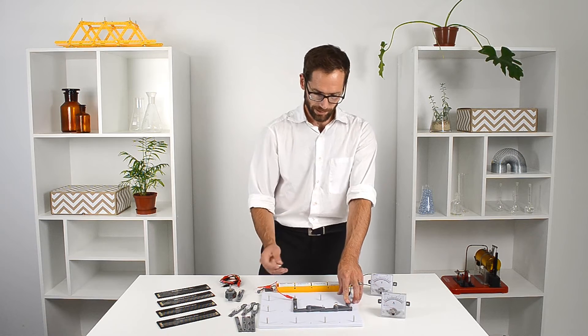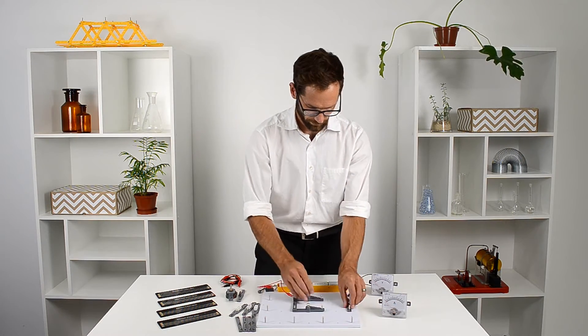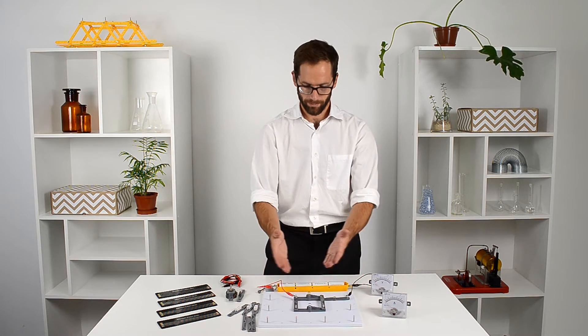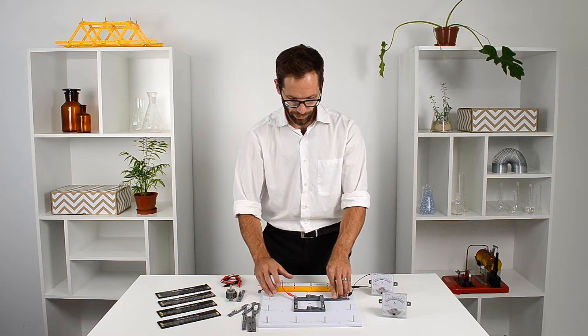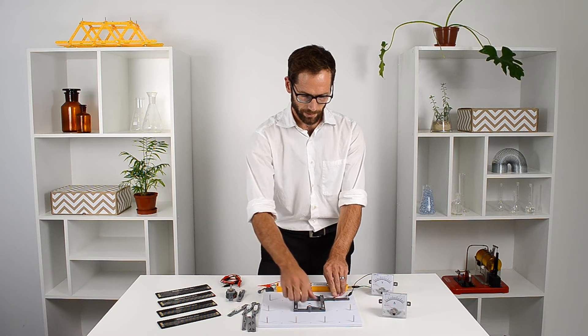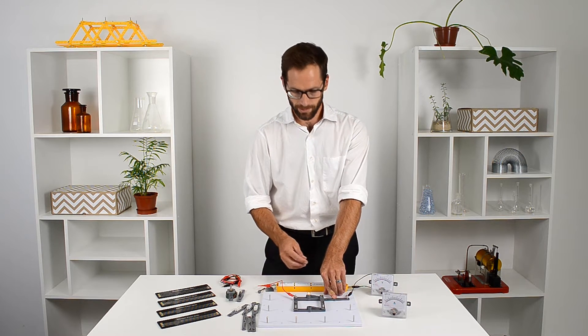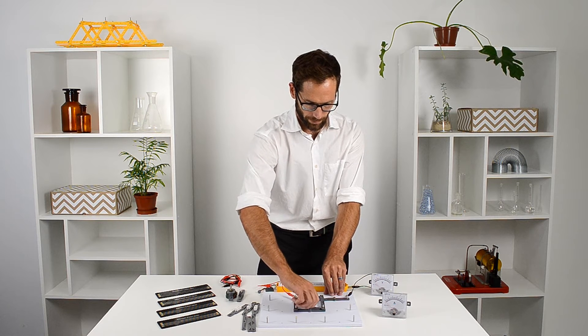But now we're going to compare that to a parallel circuit. There I have my bulbs in parallel, and when I push the switch, they both are burning. You'll notice as well that they're burning brighter than they were when they were in series. And now if one of the bulbs had to blow, what would happen? The rest of the circuit still works and is still receiving the same power.